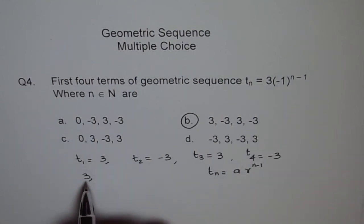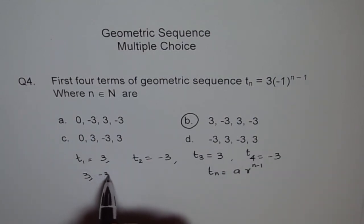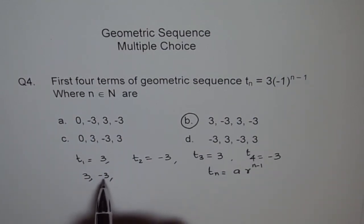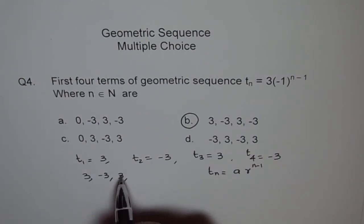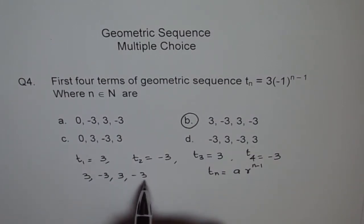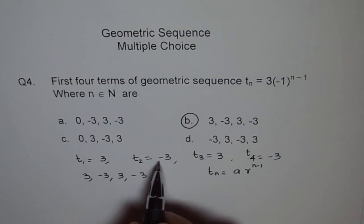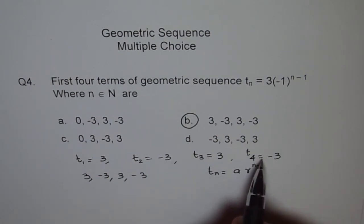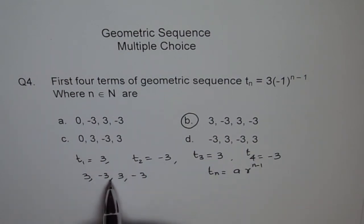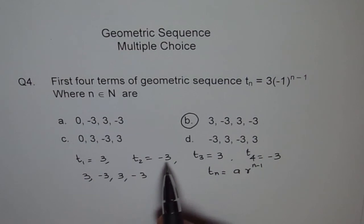So once we multiply 3 by minus 1, we get minus 3. Then multiplying that previous term by minus 1 gives us 3, and multiplying again gives minus 3. So we get the same sequence as before. These are two different ways of doing it — you can adopt any.